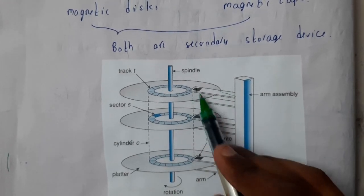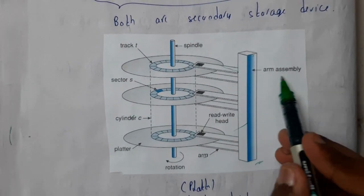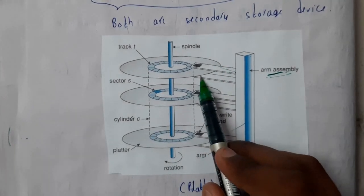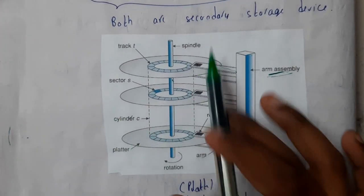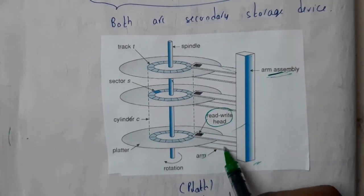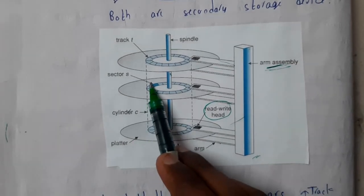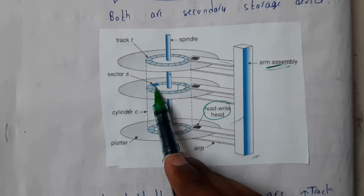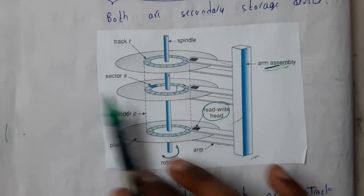The arms for a particular disk are connected to the arm assembler, which controls the arms. If you rotate one disk to the right, all the disks rotate together. If you move one arm, all arms move together. These arms perform read and write operations — this is the head. We also have tracks, sectors, and cylinders on the disk.